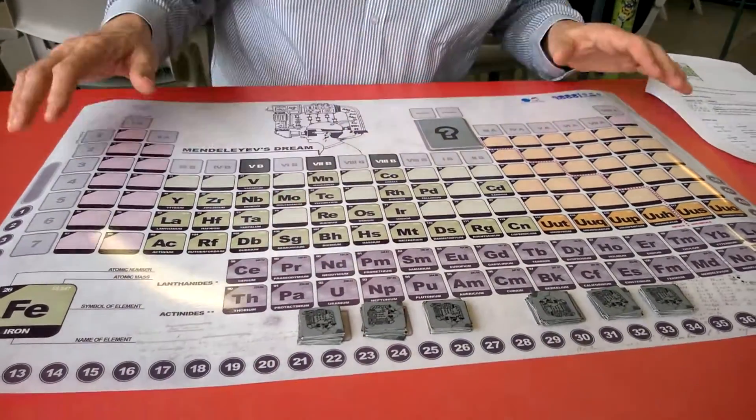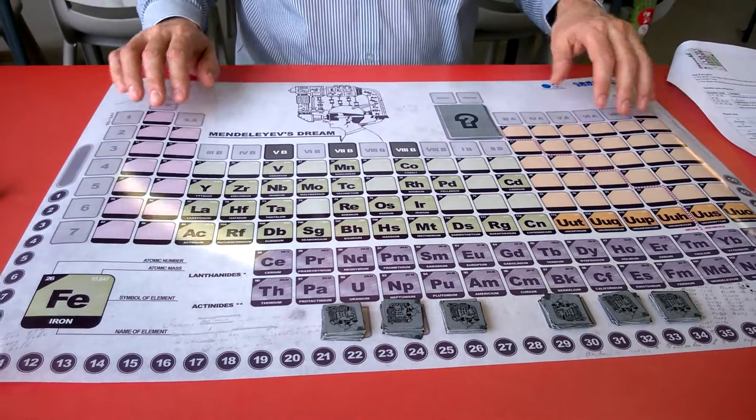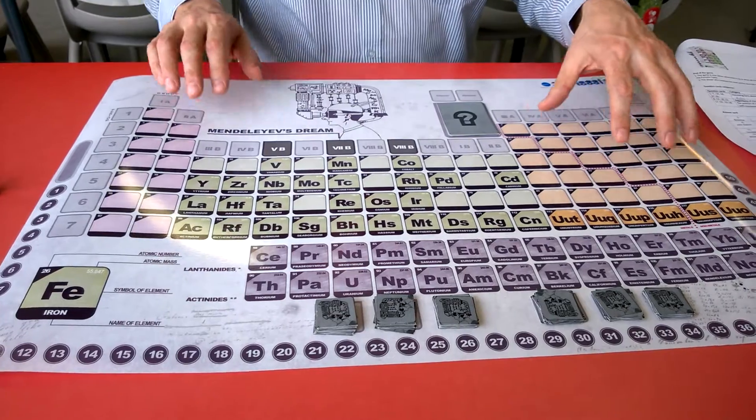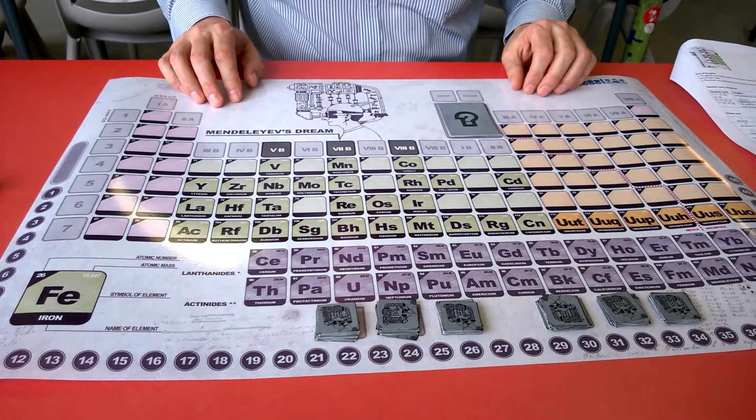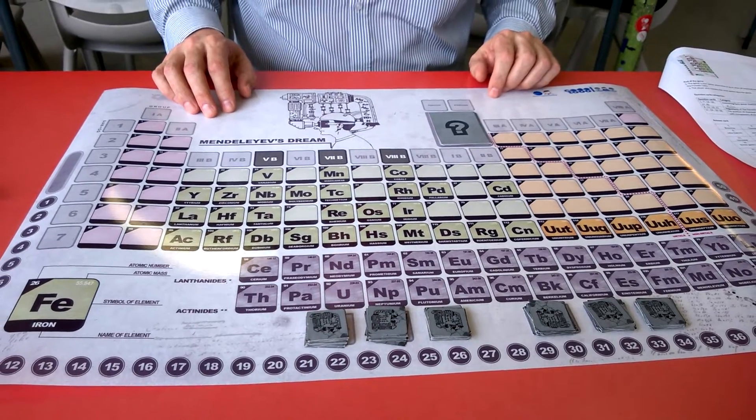In Mendelov's Dream we have a periodic table with its normal groups and periods and most of the more common elements are missing and the aim of the game is to try to put as many of these elements into the correct places as possible.